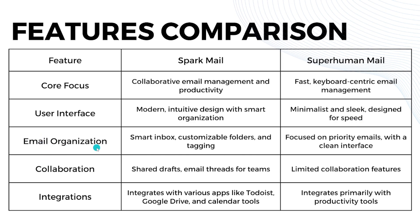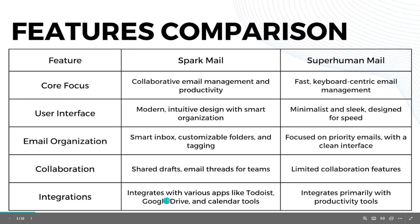For email organization, Sparkmail has a smart inbox, customizable folders, and tagging, while Superhuman Email focuses on priority emails with a clean interface. For collaboration, Sparkmail has shared drafts and email threads for teams, while Superhuman Email has only limited collaboration features. For integration, Sparkmail integrates with various apps like Todoist, Google Drive, and Calendar tools, while Superhuman Email integrates primarily with productivity tools.